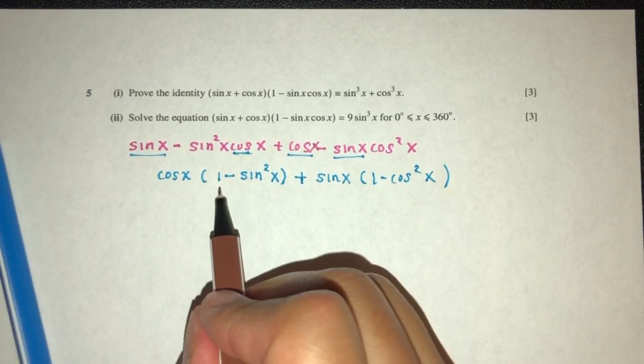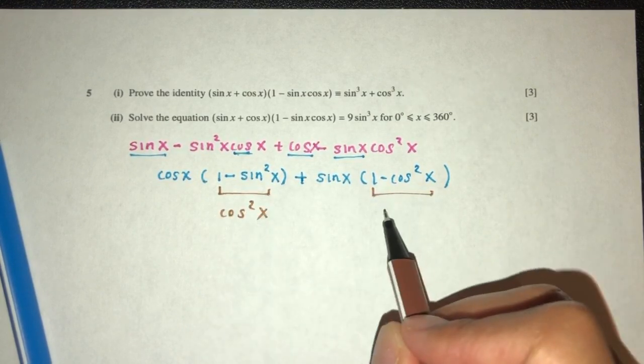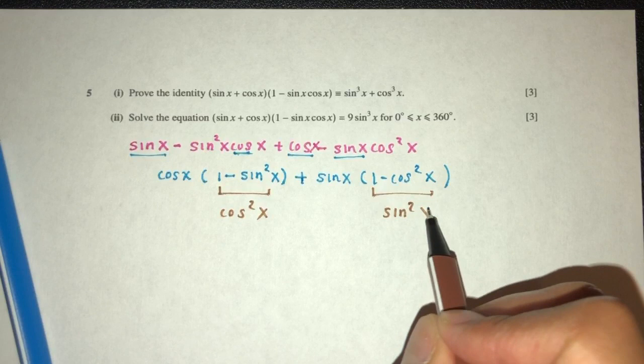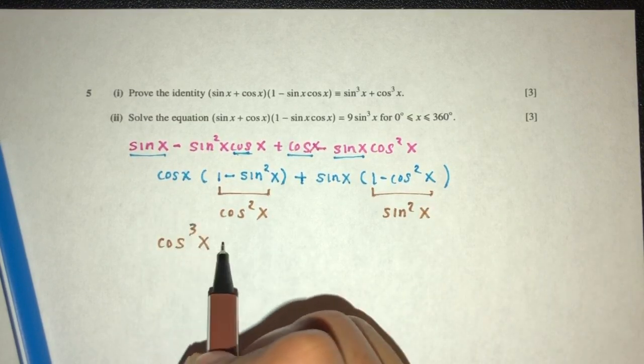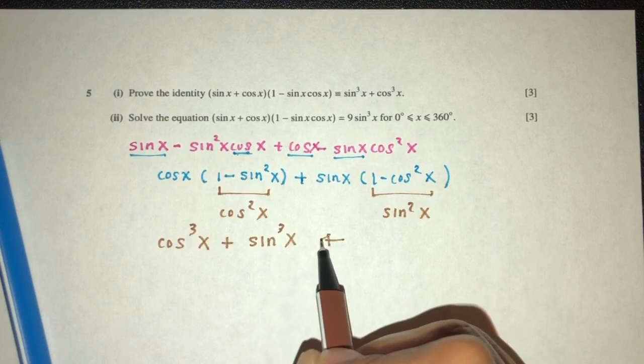So now we realize something happens here. What is this and what is this? This is simply cos²x and that is simply sin²x. That will become cos³x plus sin³x.